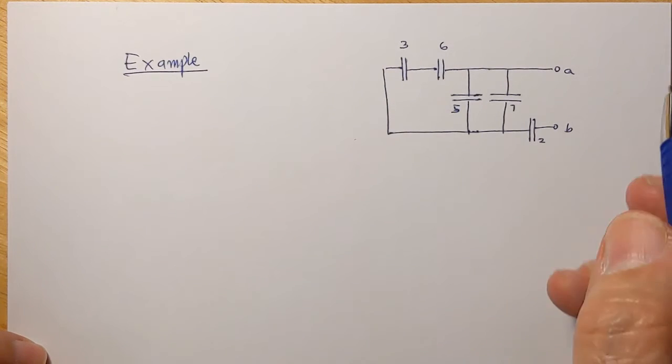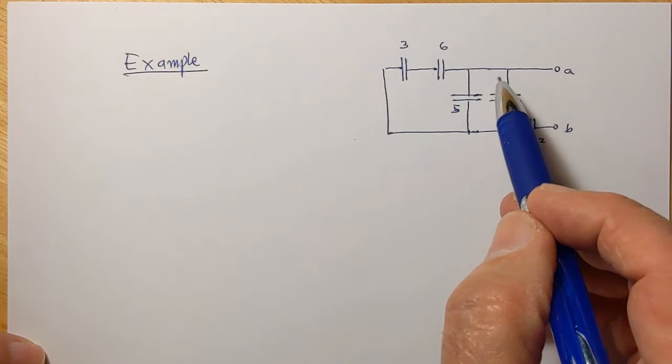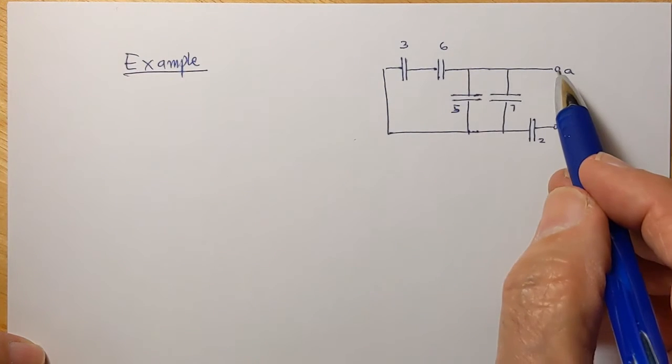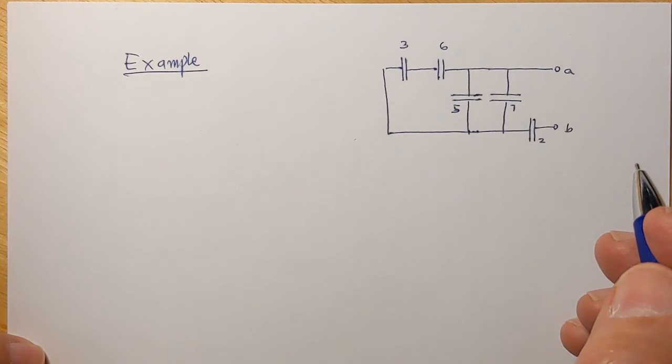We now see an example where we have a circuit and there are a number of capacitors, and we want to find the equivalent capacitance between the points A and B.